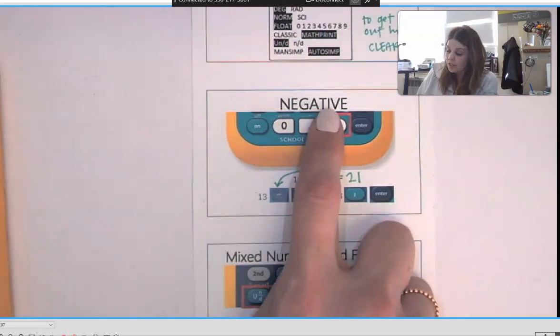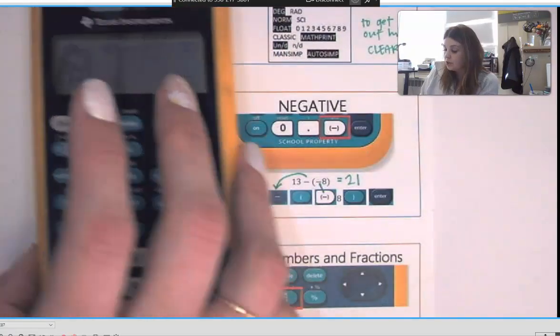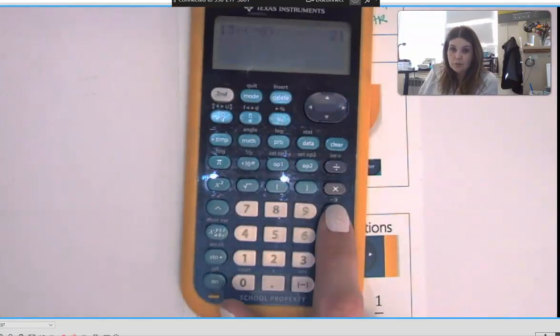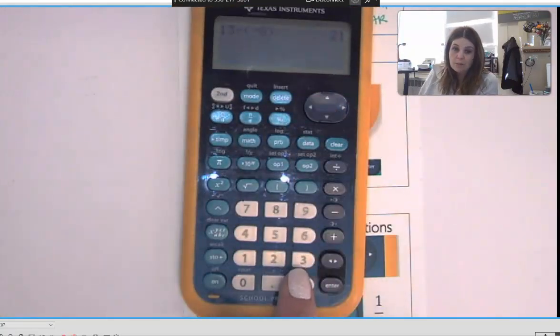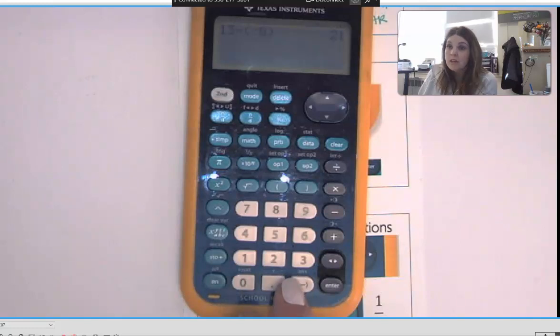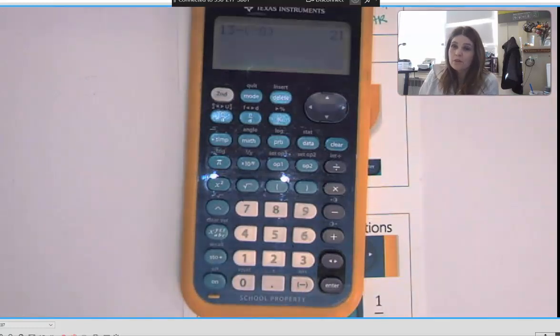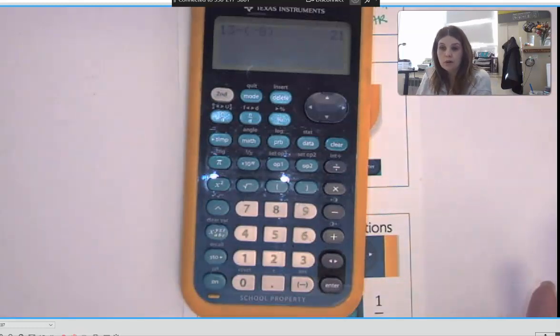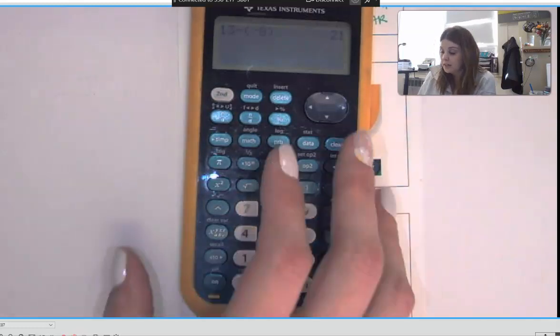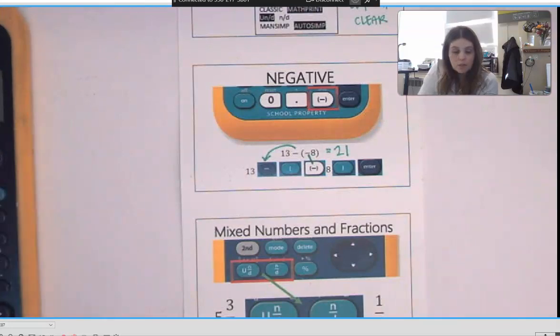So that's the first key here that I need you to pay attention for is that your negative and your subtract are different and you have to be really careful about it. If you're unsure whether the problem is asking you to do subtract or negative, try it both ways and see what happens. Normally one way will give you a syntax error, so that would be your indicator that you need to try a different way.